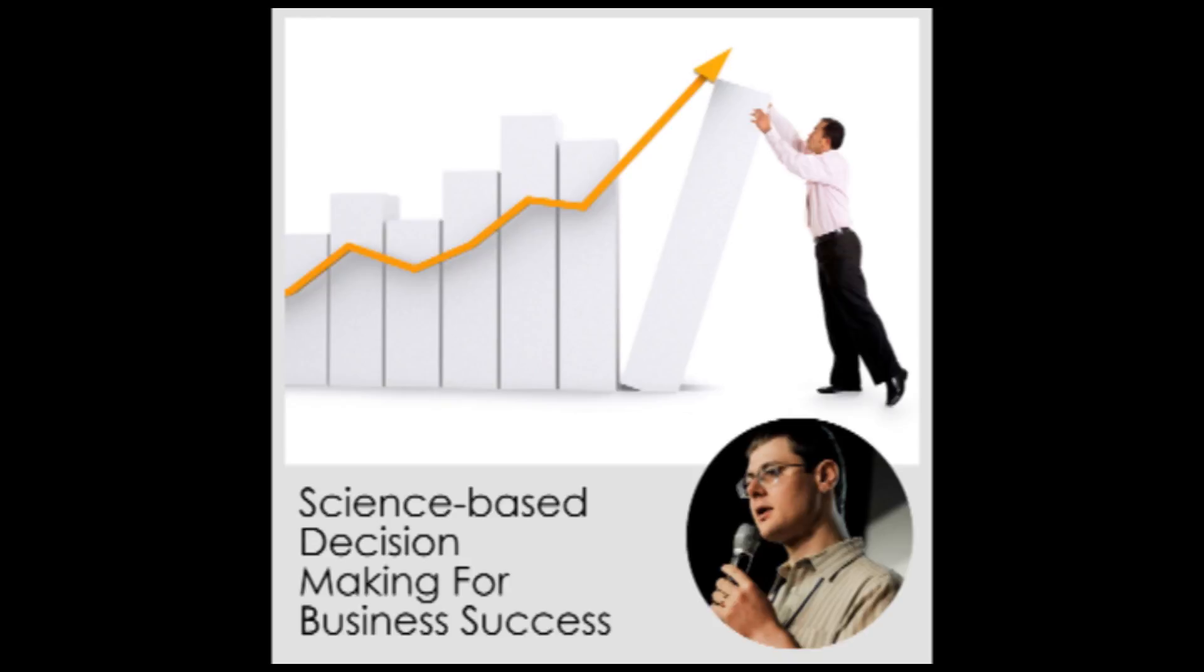One of the things that research shows that happens to entrepreneurs is what's called survivorship bias. And let me share about what that is. So survivorship bias is a really interesting phenomenon that happens in business and in other areas of life where we only hear the stories of people who succeed, people who survive in their business. So entrepreneurs tend to hear only the stories of people who succeeded. The people who fail don't write books, right?